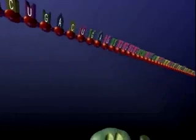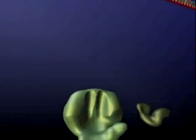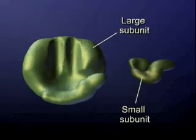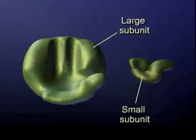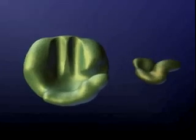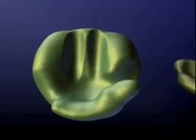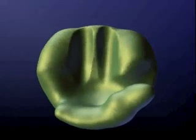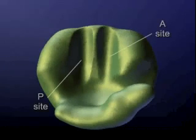The polypeptide can be assembled once RNA binds to a ribosome. Ribosomes consist of large and small subunits. The large subunit has two binding sites for transfer RNA: the P and A sites.